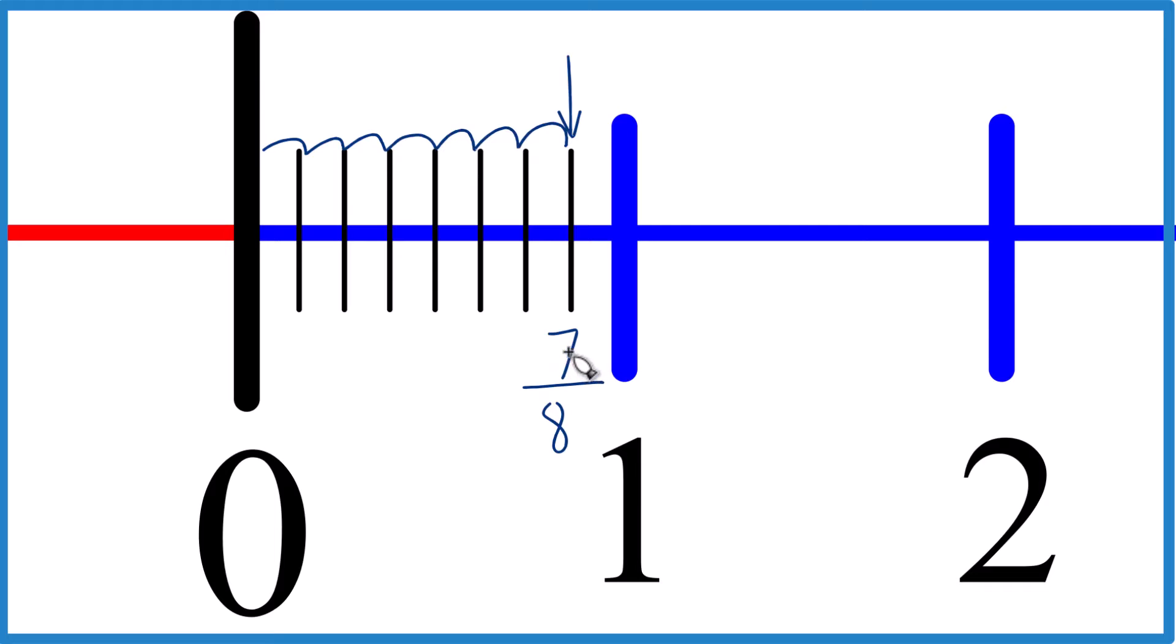There you have it. Seven eighths. That's it. This is Dr. B finding the fraction seven eighths on a number line. Thanks for watching.